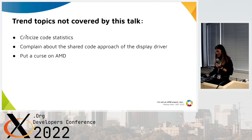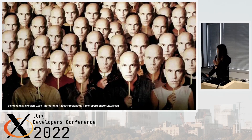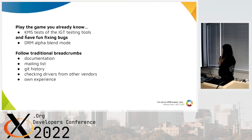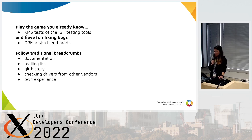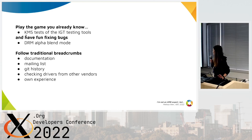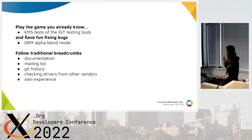As an AMD external contributor, we need to start from something. I am not a good game player, so I started with something really simple. I started from something I already know: the KMS test of the IGT test tools. And then I found something to fix, which was the DRM alpha blend mode.